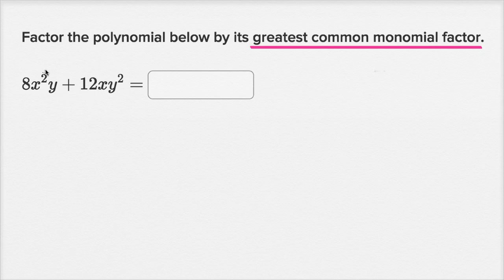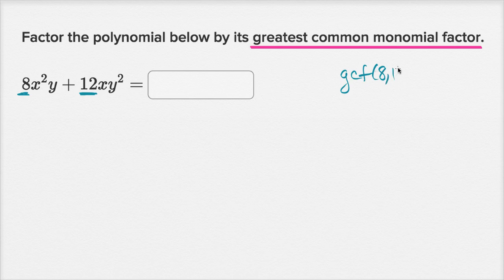One way to start is to look at just the coefficients. We have 8 and 12, and we can ask: what is the greatest common factor of 8 and 12? They're both divisible by 1, by 2, and by 4. But the greatest of their common factors is going to be 4. So the GCF of 8 and 12 is equal to 4.